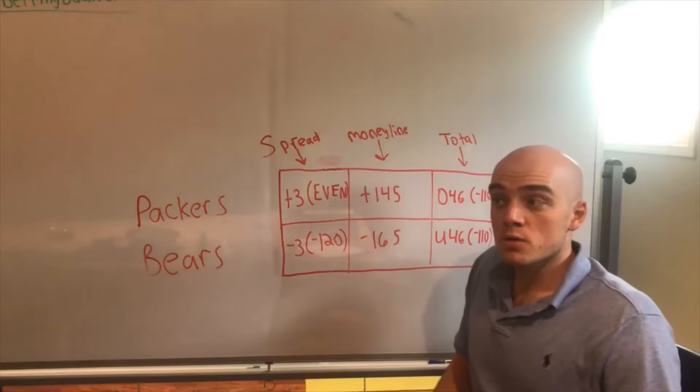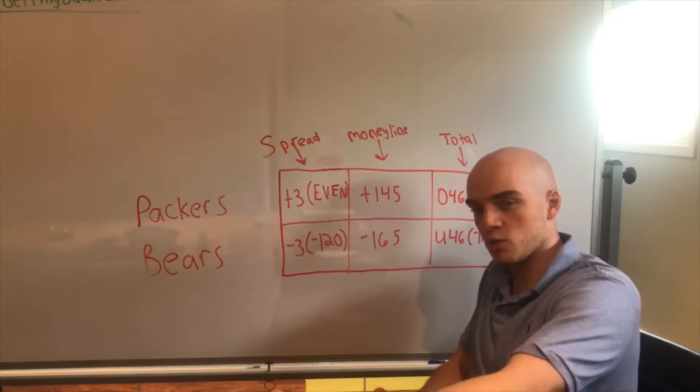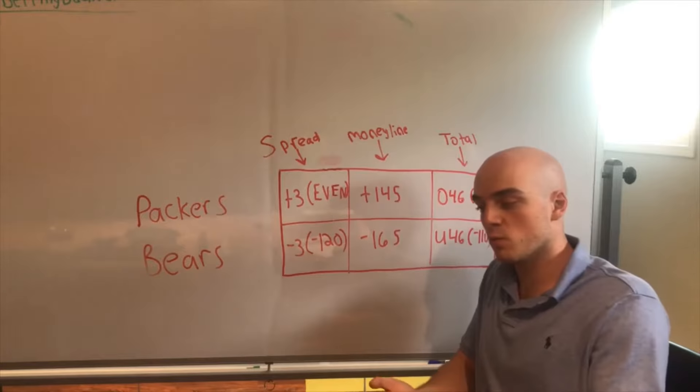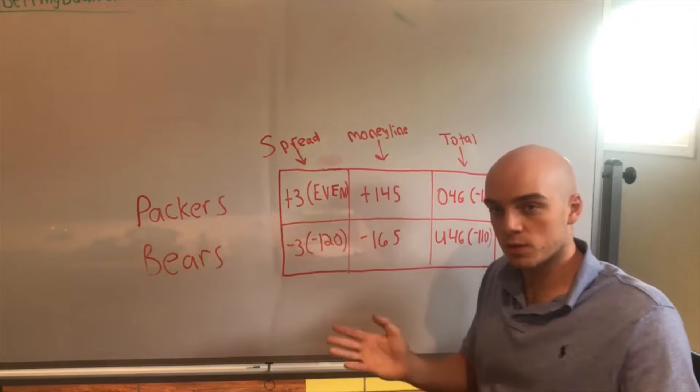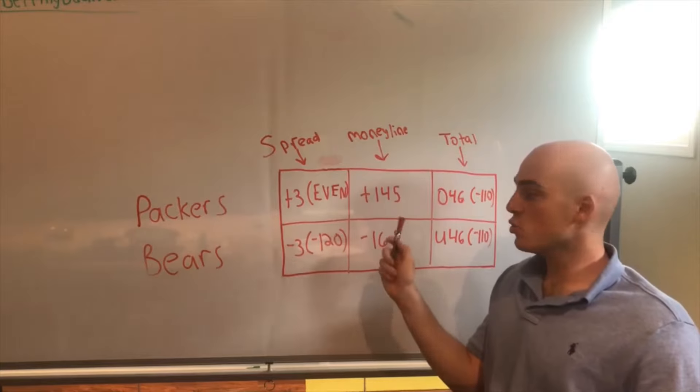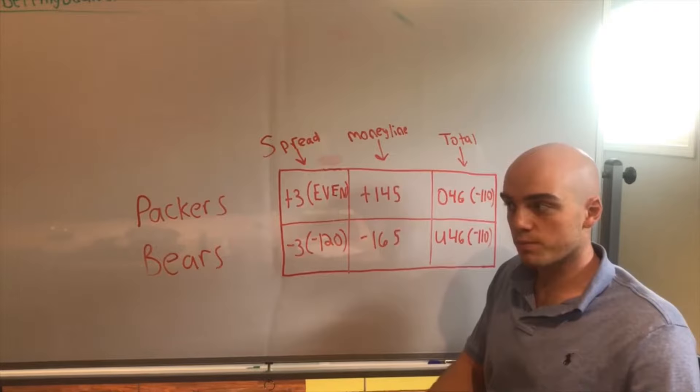On the other hand, we have the Chicago Bears at minus 165, which means that you have to bet $165 to receive a $100 payout. So you give the sportsbook $165, the Bears win, the sportsbook hands you back $265 - the $165 that you bet plus the $100 payout for a total of $265. So that's pretty much it for money line bets.